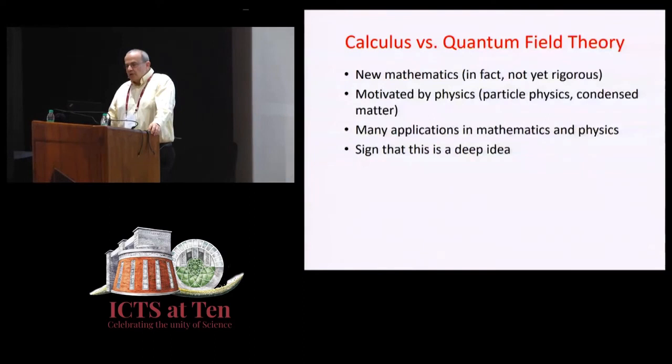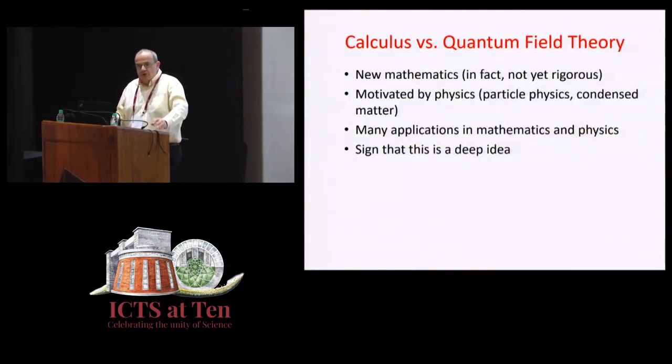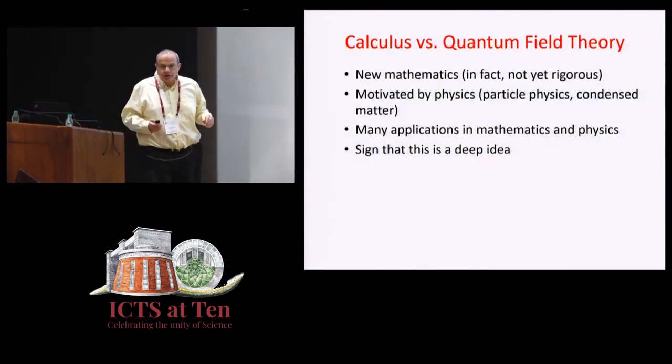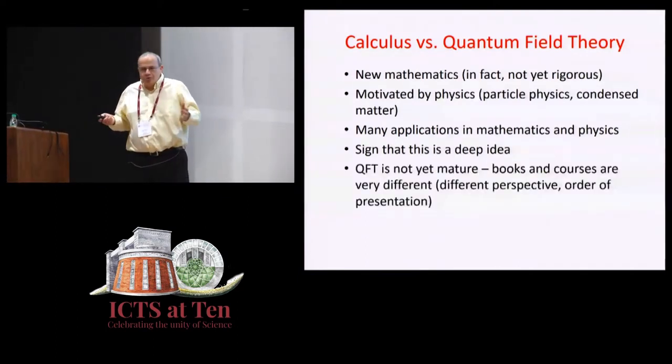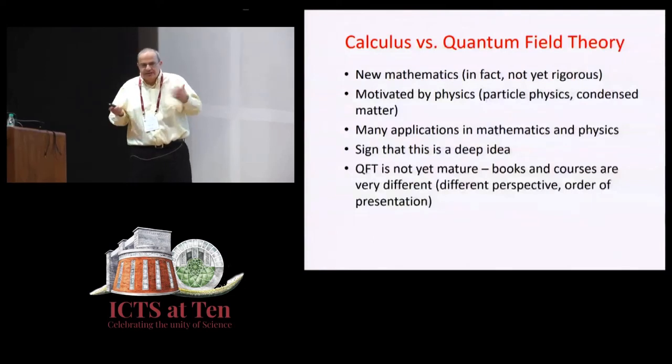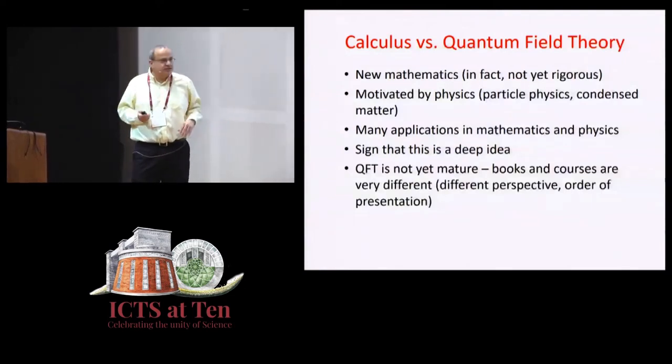The next thing in calculus in my list was the maturity test. And I recall the criterion. The criterion for maturity was that all courses are taught more or less the same. All books are more or less the same. Maybe the examples are different, but it's basically the same presentation.